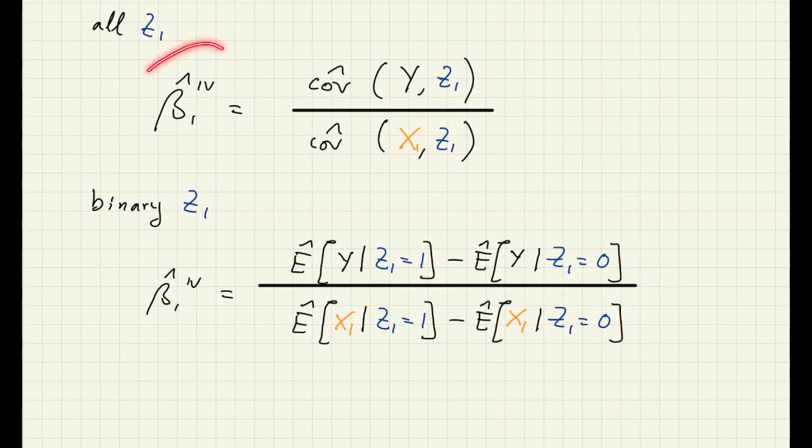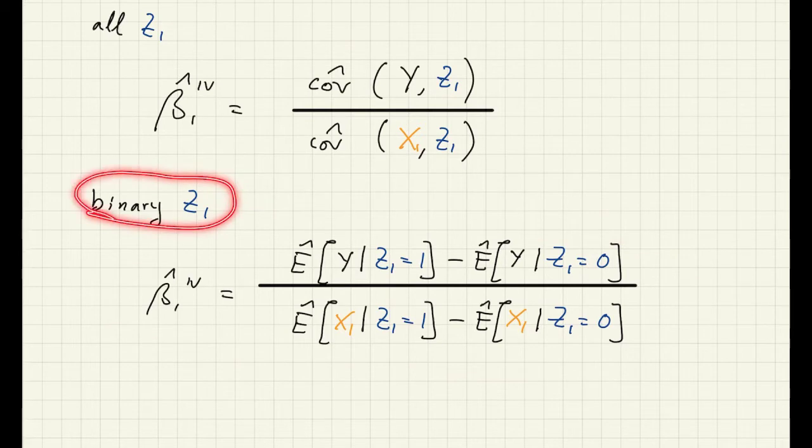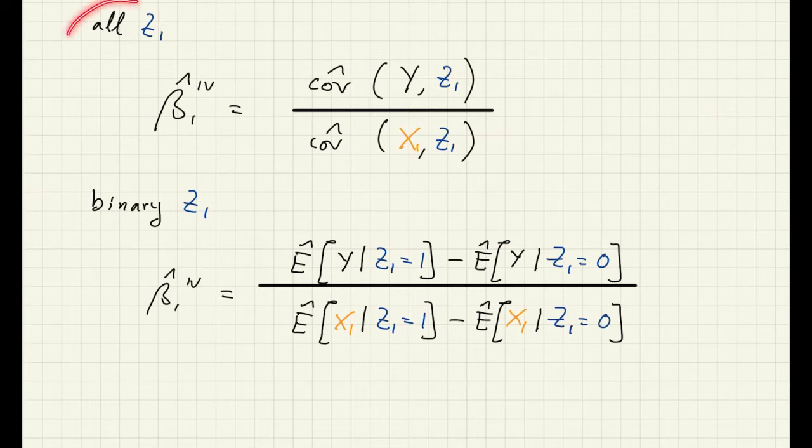Well, we have this general form for the IV estimator, where we have some instrument and we don't assume anything about the instrument really. And then we have what we call the Wald form of the IV estimator, this one, that works for a binary instrument, so an instrument that takes only the values 0 or 1. When I said we don't assume anything about the instruments, what I meant is this could be a binary instrument or it could be a continuous instrument or an instrument with several discrete mass points, so we don't make any assumptions of that sort.